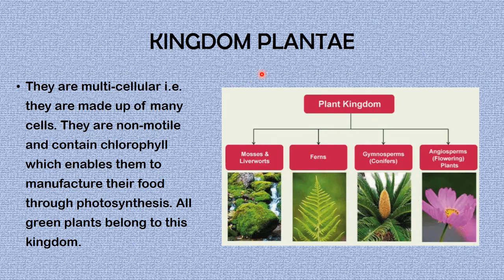Now we are moving on to kingdom Plantae — in another video we'll look at it in greater detail. Plants are multicellular and non-motile. They contain chlorophyll, which enables them to manufacture their own food through photosynthesis — in other words, they are autotrophs. All green plants belong to this kingdom. Under the plant kingdom we have mosses and liverworts, ferns, gymnosperms, and angiosperms.